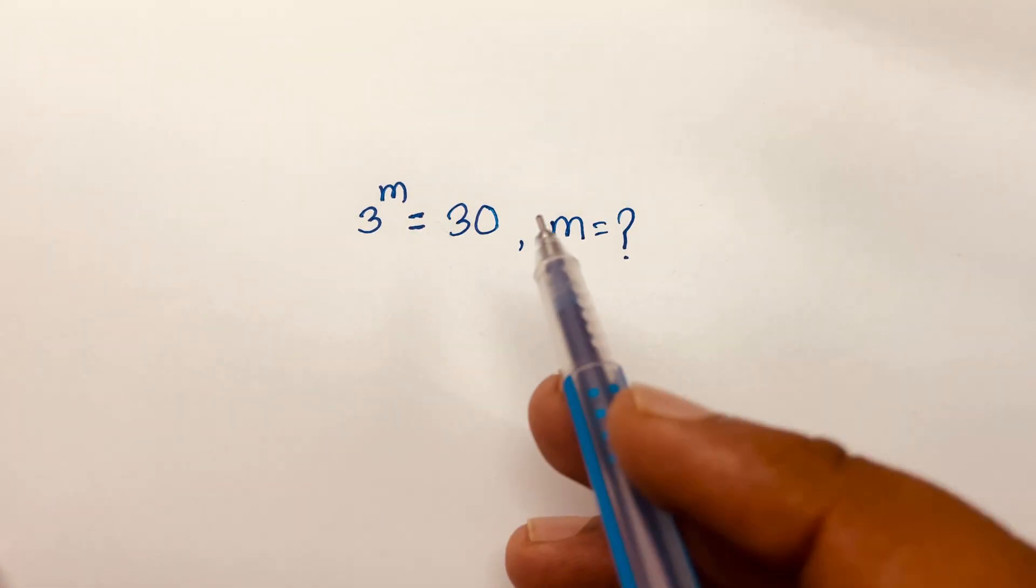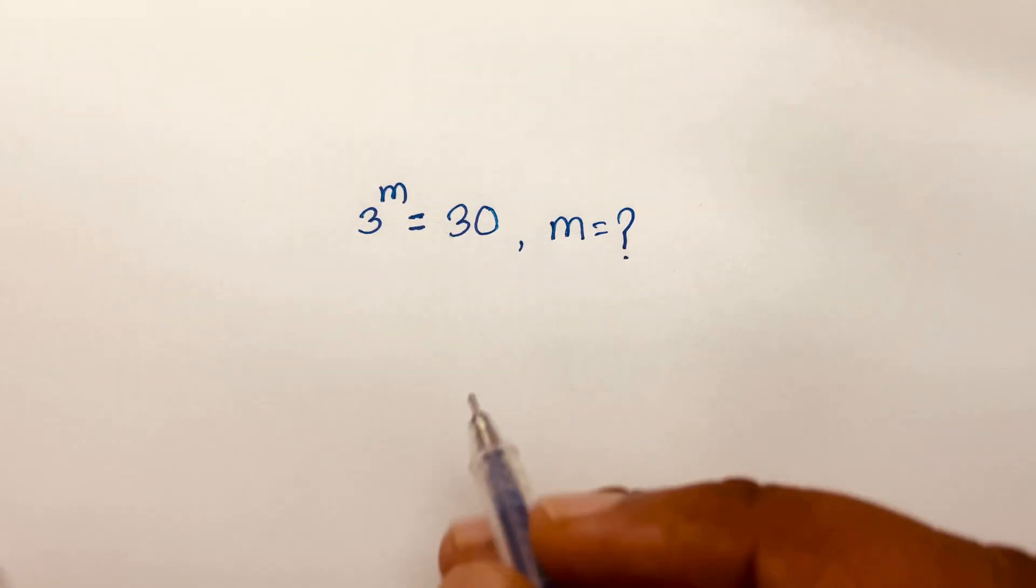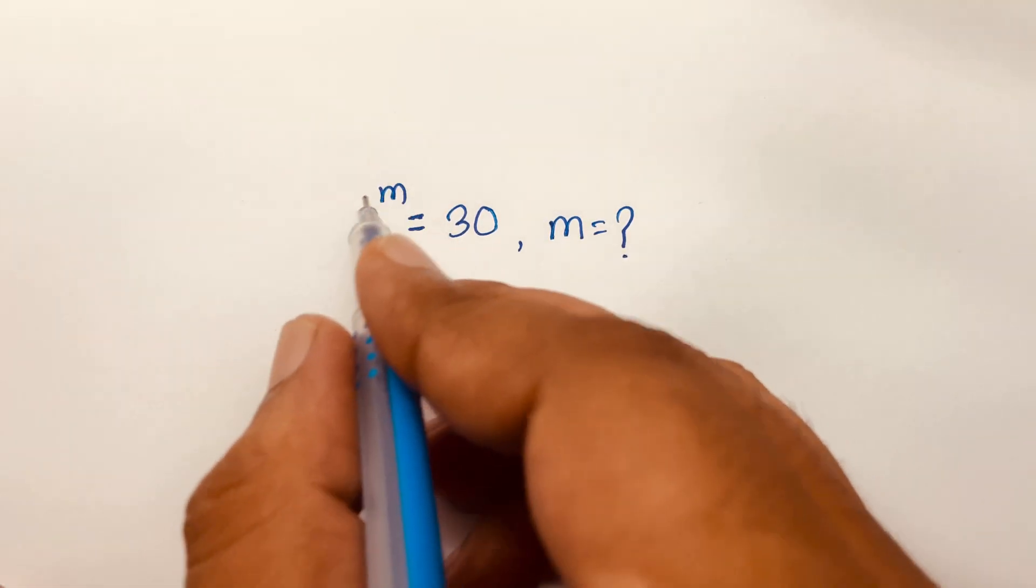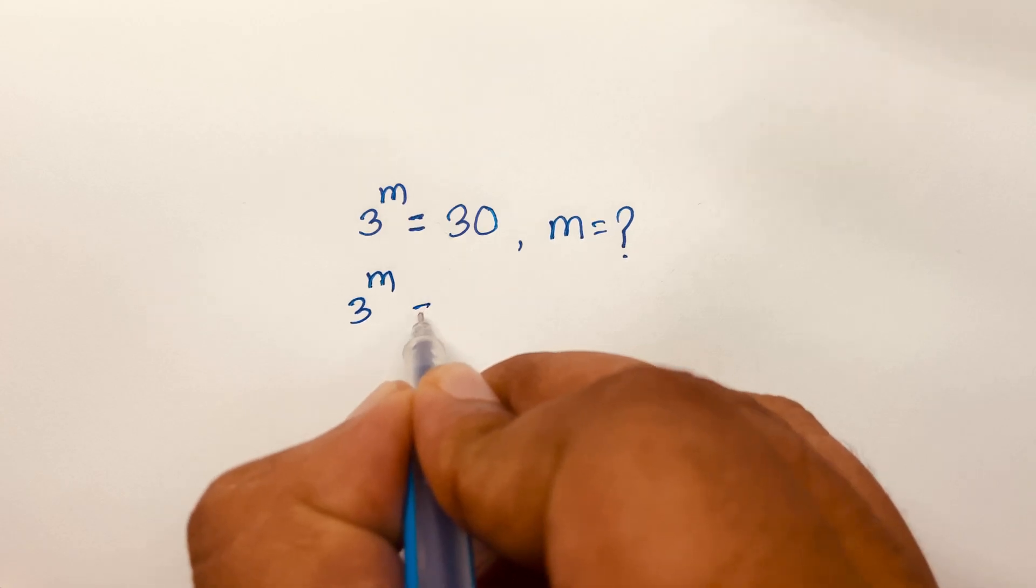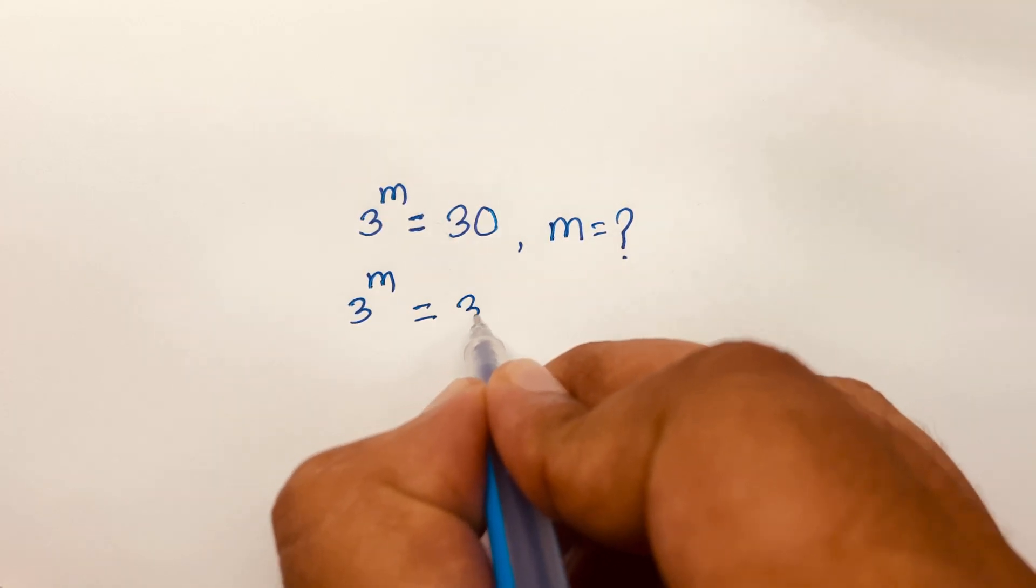How to solve 3 power m equals 30? We'll find out what is the value of m. First of all, I can say it will be 3 power m equals 30, which is 3 times 10.